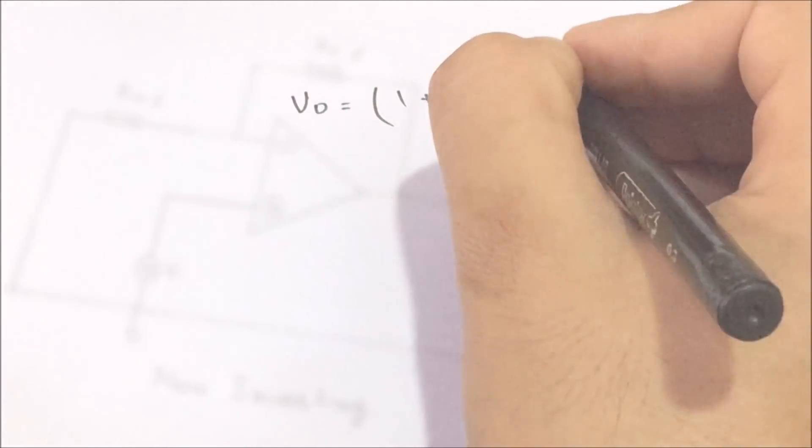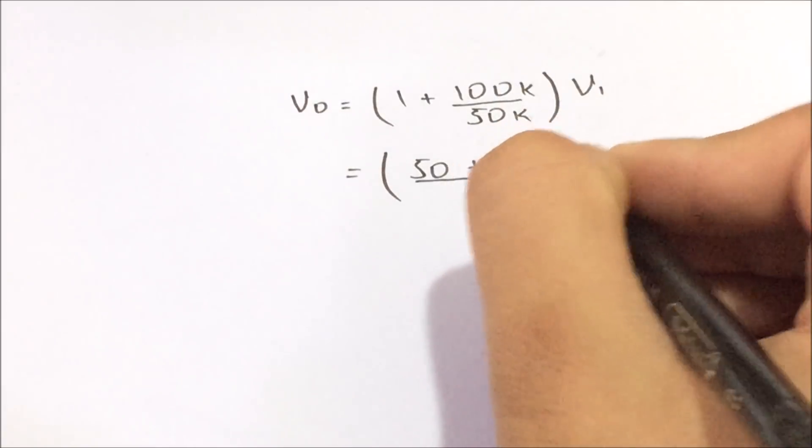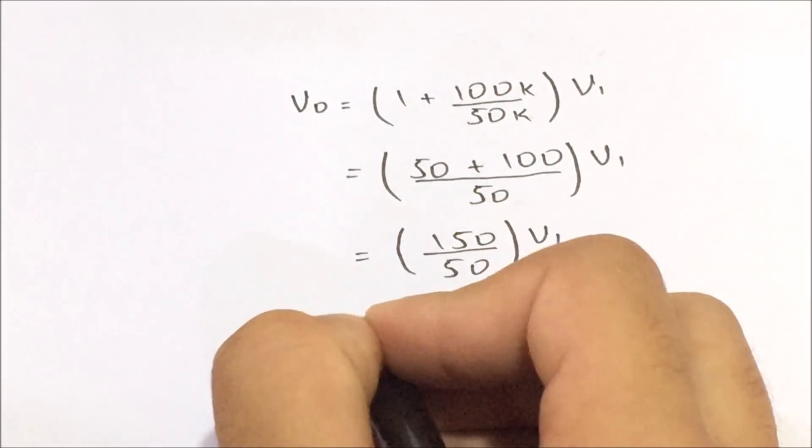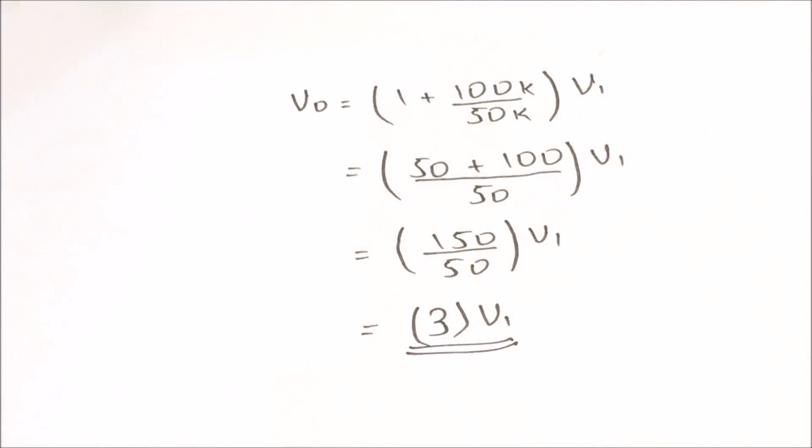So if I set the feedback resistor to 100 kilo ohm and the input resistance to 50 kilo ohm, after doing a bit of math, we get a gain of 3, meaning that our input signal will get multiplied with a factor of 3.